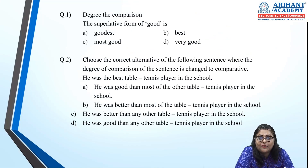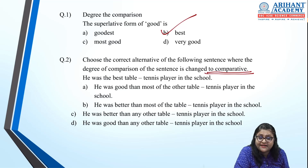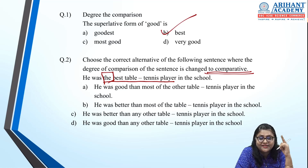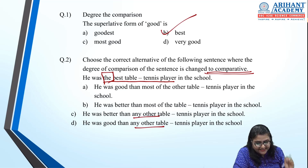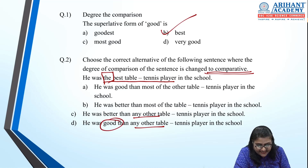MCQs on degrees. The superlative form of 'good' is 'best.' Next: change to comparative — 'He was the best table tennis player.' The article 'the' is present, so it's Type A. In comparative, use 'any other.' Option C: 'He was better than any other table tennis player in the school' is correct.